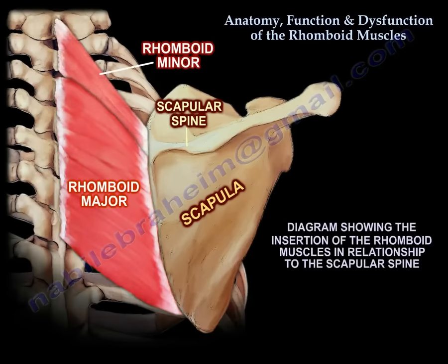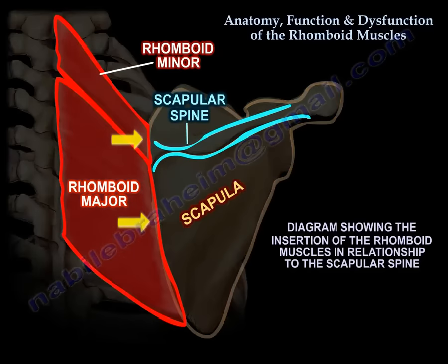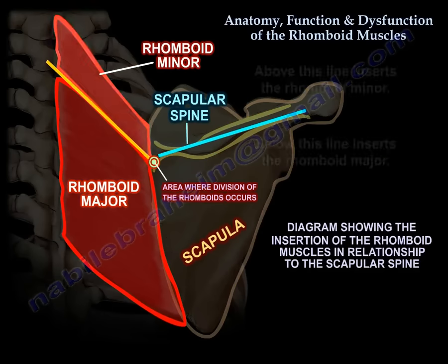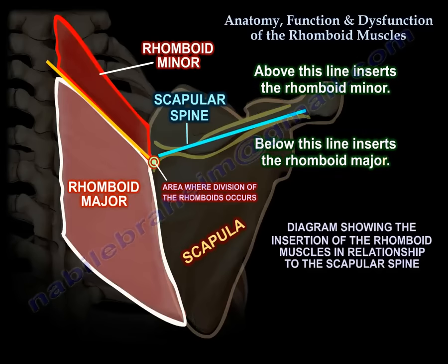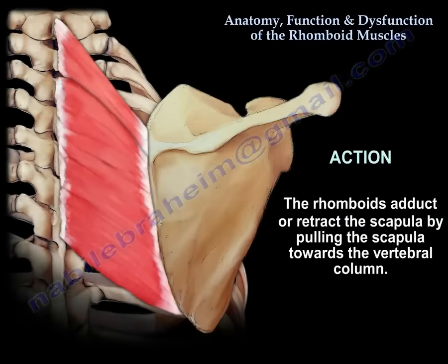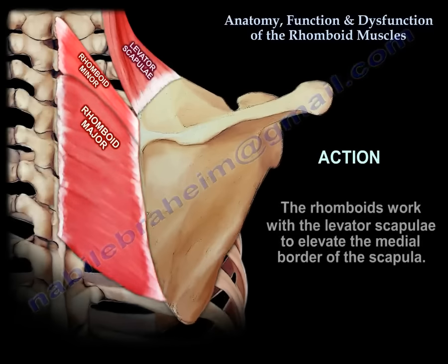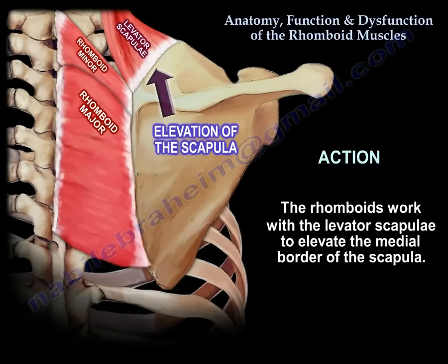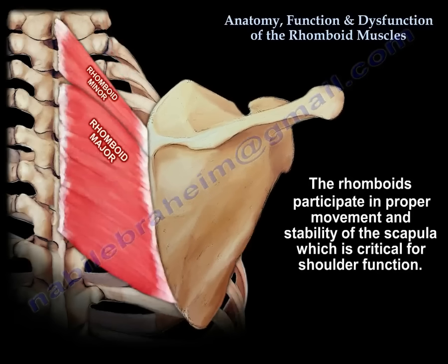Here is a diagram showing the insertion of the rhomboid minor and major in relationship to the spine of the scapula. Here is a line parallel to the spine of the scapula, and here is the line of separation between the two muscles. Above this line inserts the rhomboid minor, and below this line inserts the rhomboid major. The rhomboids work with the levator scapula to elevate the medial border of the scapula, and also rotate the scapula downwards with respect to the glenohumeral joint. The rhomboids participate in proper movement and stability of the scapula, which is critical for shoulder function.